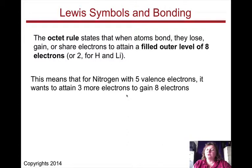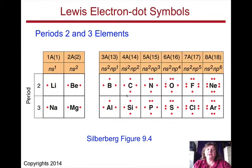This means that for nitrogen with five valence electrons, it wants to attain three more electrons to gain eight electrons. So we can take a look at periods row two and three, and be able to predict how many bonds each one of the elements are going to attempt to make in order to complete their octet.